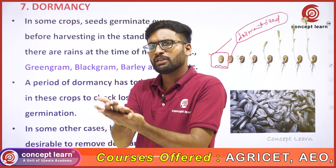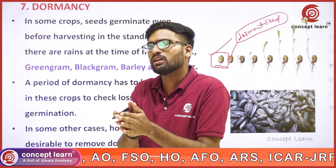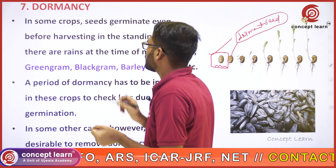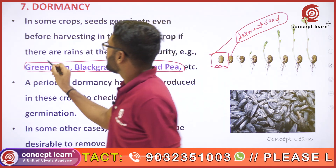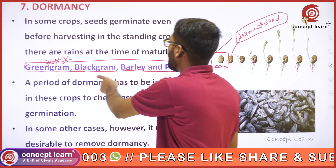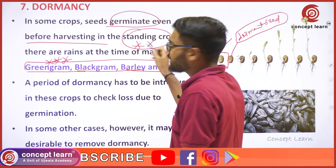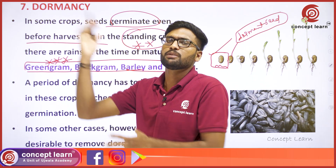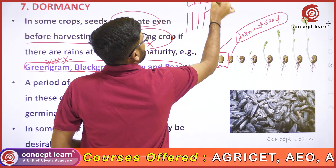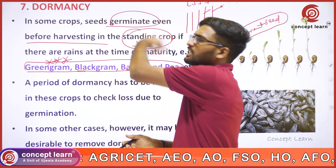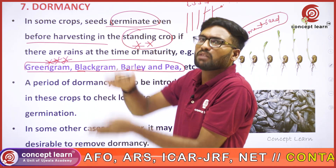In the maturity stage of a standing crop, seeds are formed. At that particular time, if seeds germinate on the plant itself, it becomes a problem. So, the ability to prevent germination — dormancy — is a most important objective in some crops. Other than that, removal of dormancy is also important.